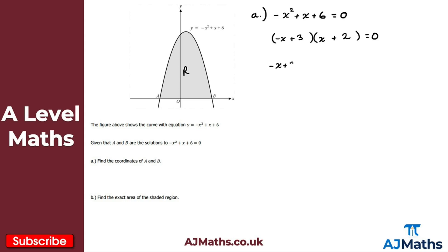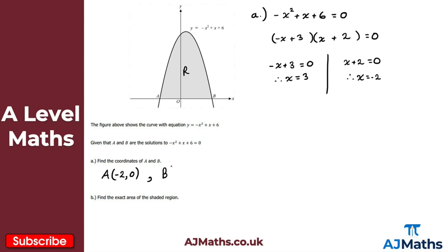This gives two solutions. When minus x plus 3 equals zero, x equals 3 — that's point B, a positive x value. When x plus 2 equals zero, x equals minus 2 — that's point A. So A is (−2, 0) and B is (3, 0).